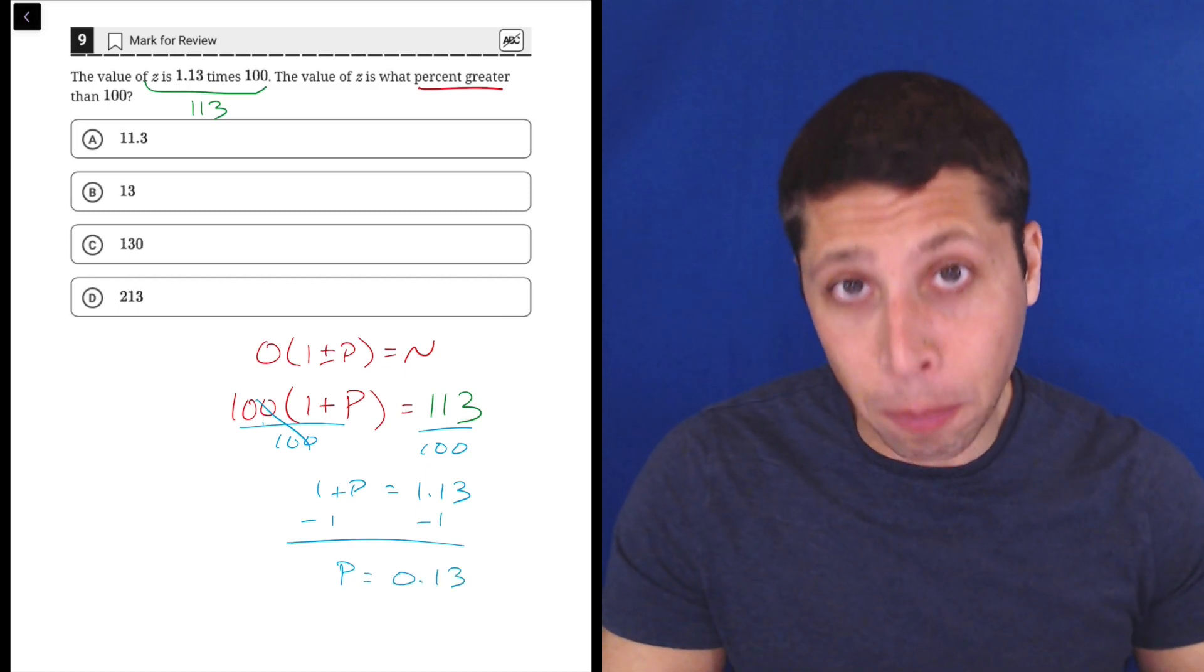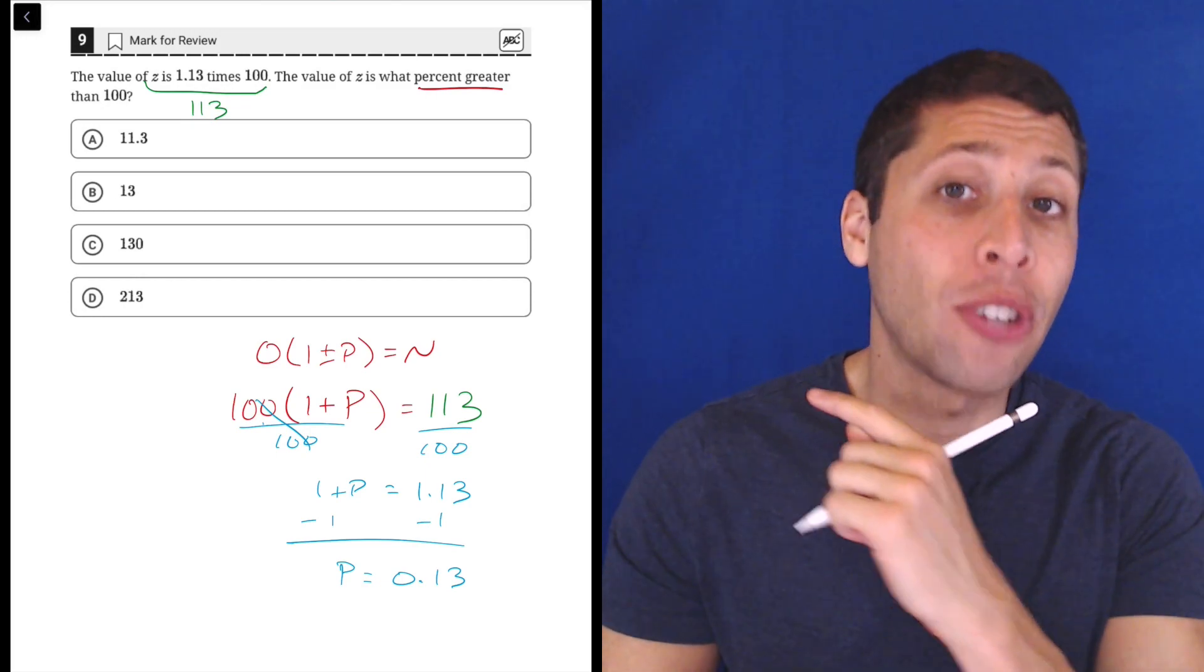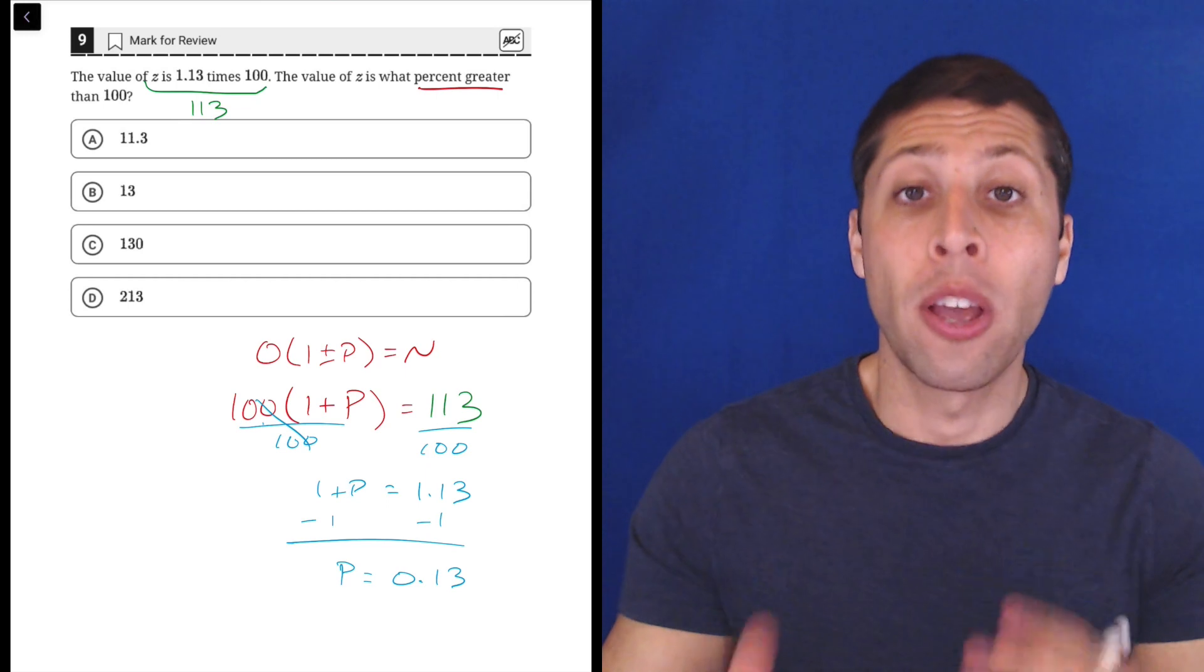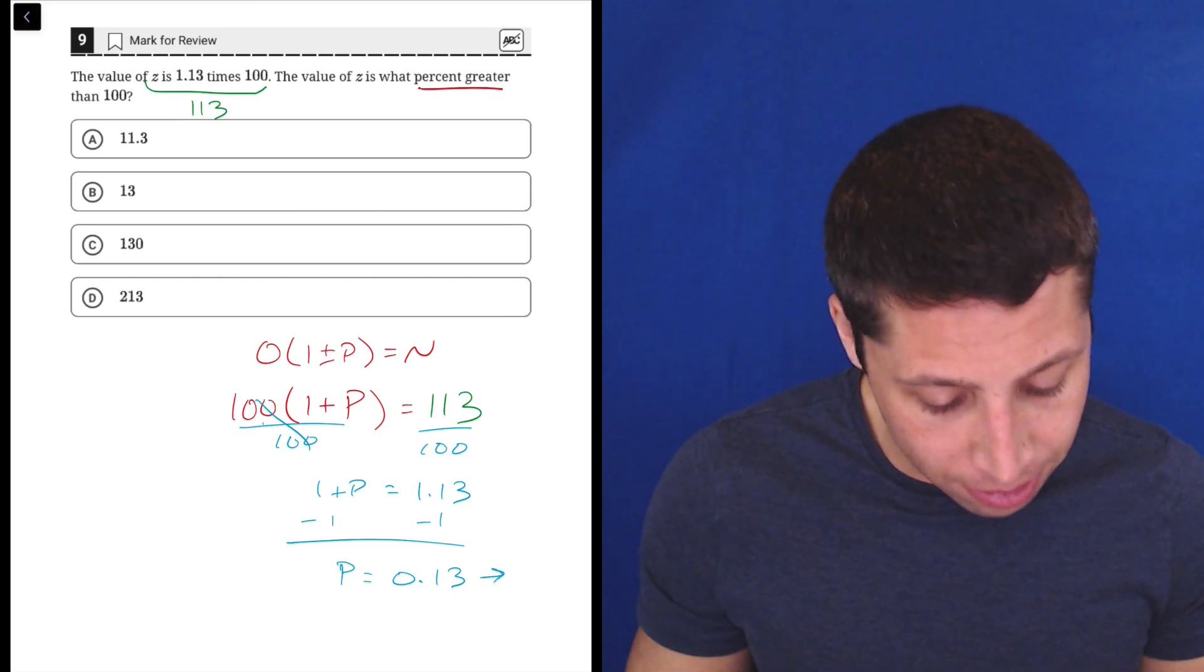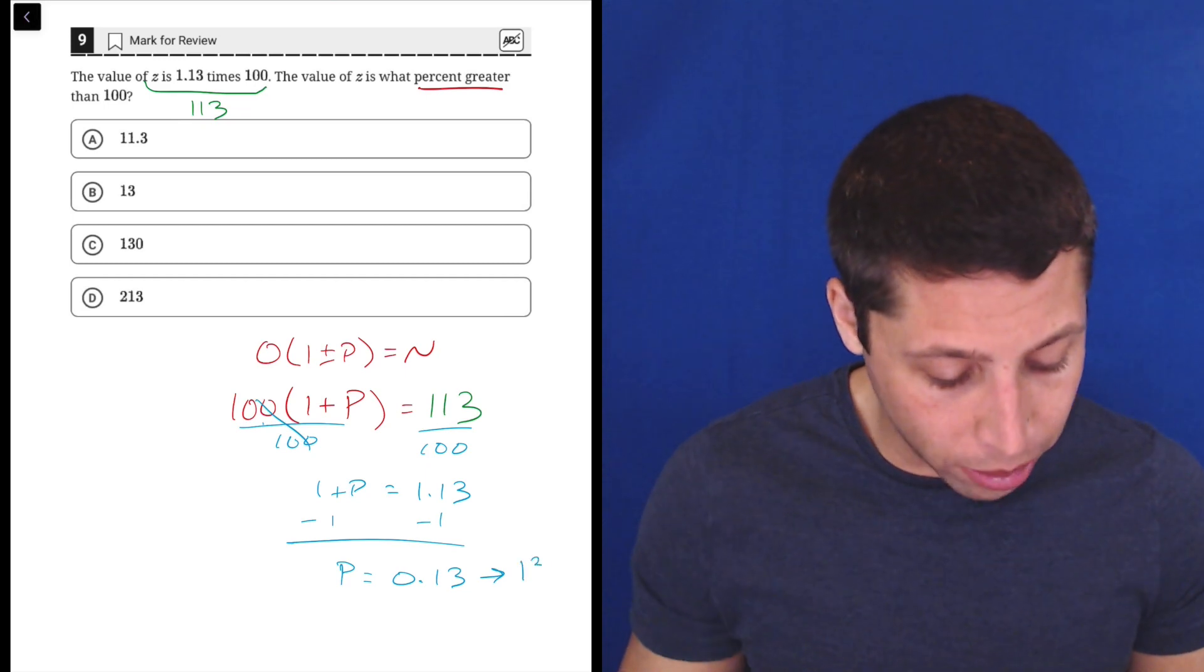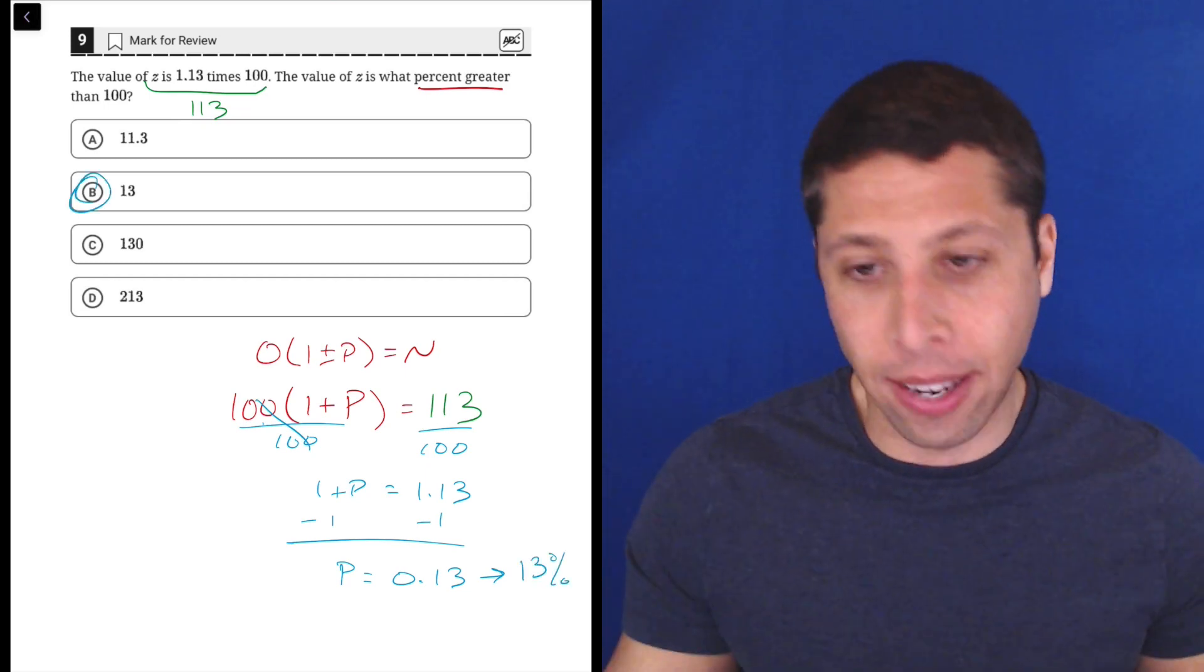Now that's not an answer. Because remember, the percentage in this formula is expressed as a decimal. Pretty much every time we work with percentages in math, we use a decimal version. So we have to convert this back. And that means that 0.13 is really 13%. That is what we've been asked, and that is the answer here.